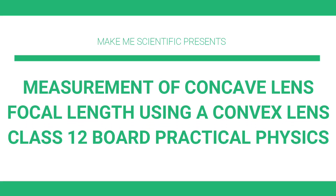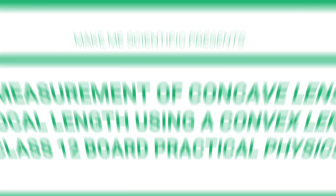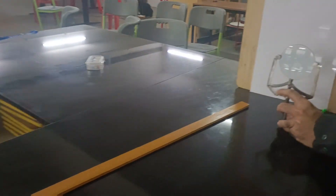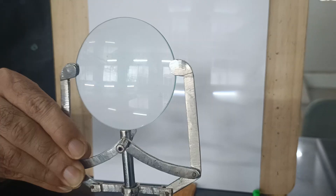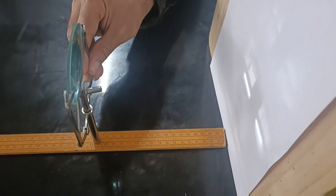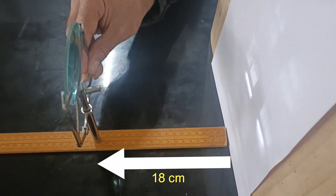Hello scientific audience. In this video we will measure the focal length of a concave lens using a convex lens. For this experiment we require the following things. We will measure the rough focal length of a convex lens by placing it in front of a screen. The sharp image of a distant object outside the window is obtained on the screen as shown. The distance between the screen where the sharp image is obtained and the lens is the focal length.